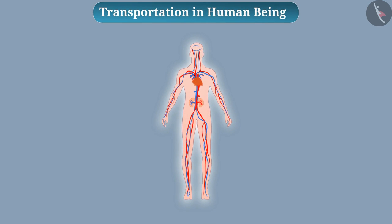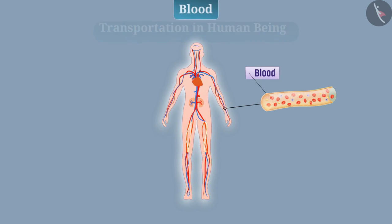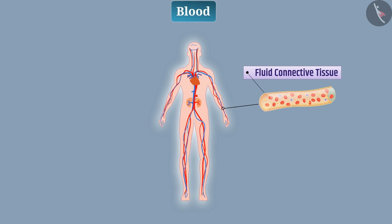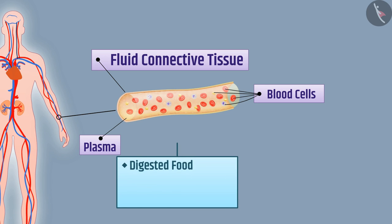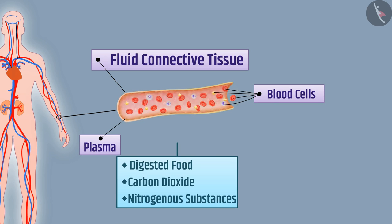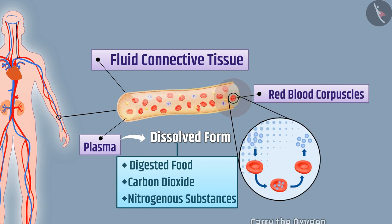Now let us look at transportation in human beings. Blood carries out transportation in humans. Blood is a fluid connective tissue made up of plasma and blood cells. Plasma carries digested food, carbon dioxide, nitrogenous substances, and other hazardous substances in dissolved form, while red blood corpuscles carry oxygen.